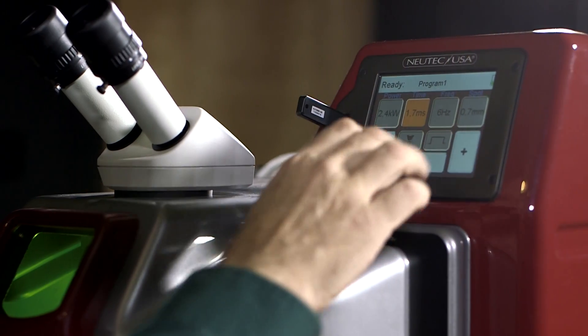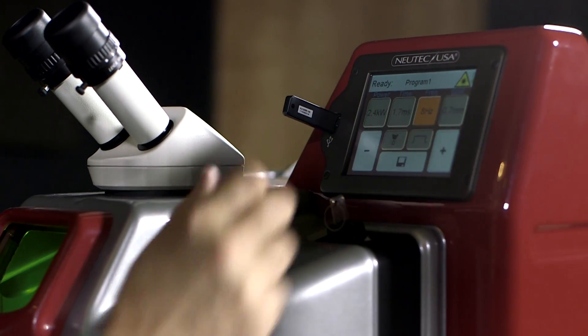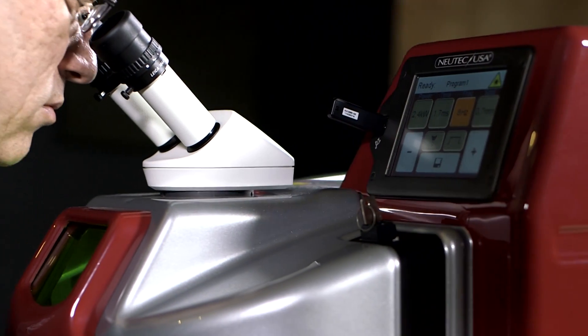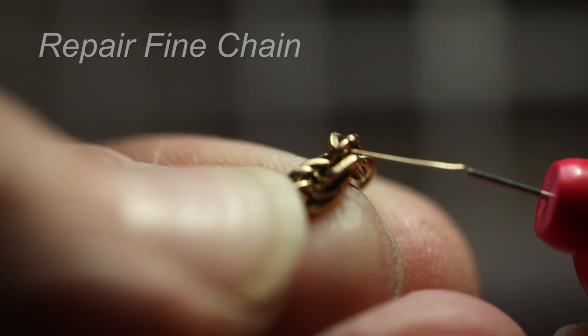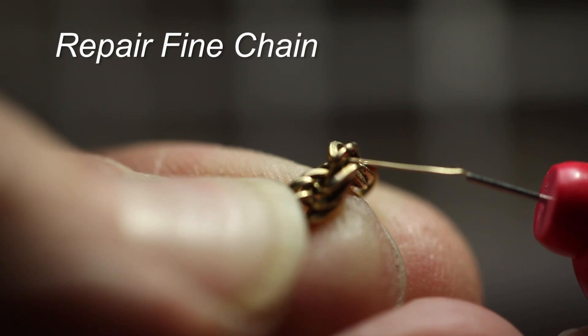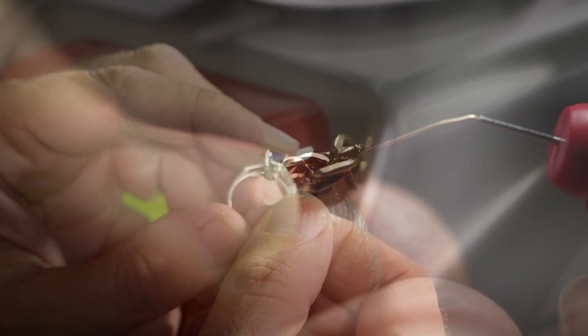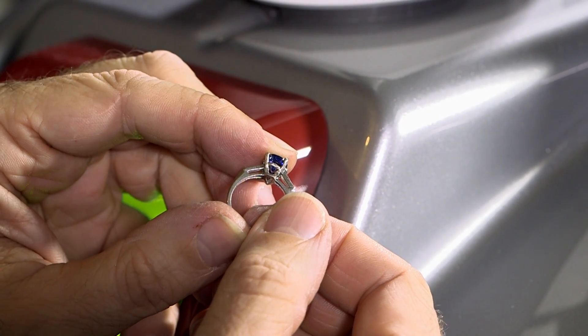Do it faster, cleaner, and often in ways no other welding method could. You can repair a fine gold link chain without disassembling it and get a clean, finished, color-matched result. Repair a broken prong on a platinum ring working right next to one or more set gemstones without removing then resetting any of them.